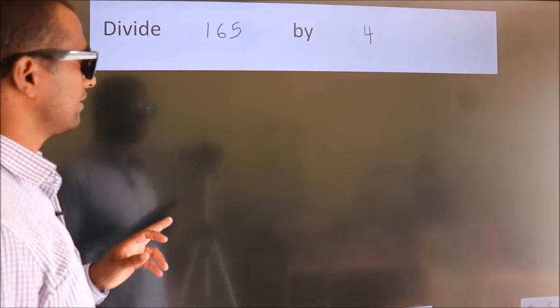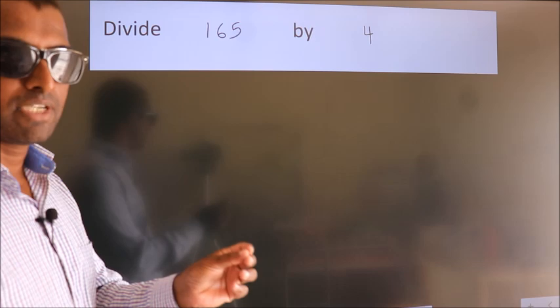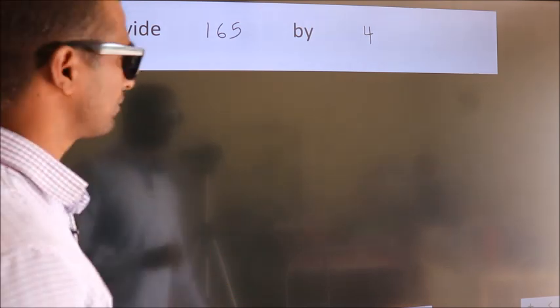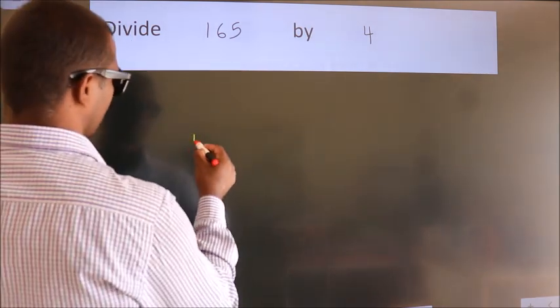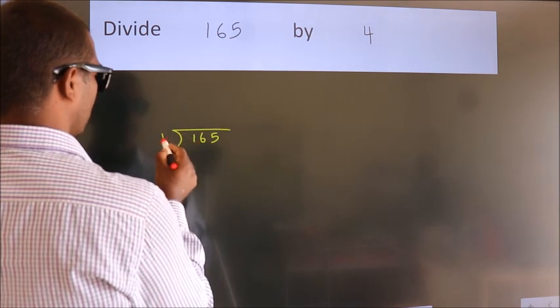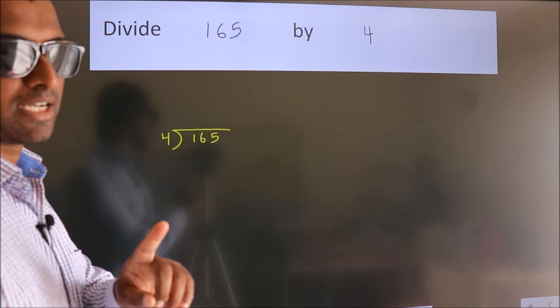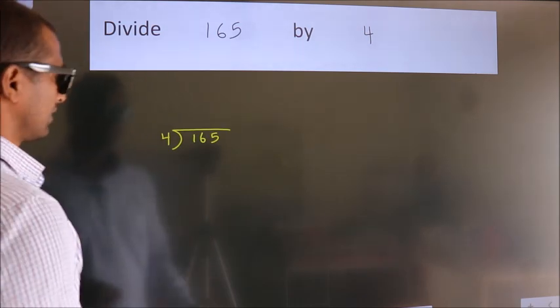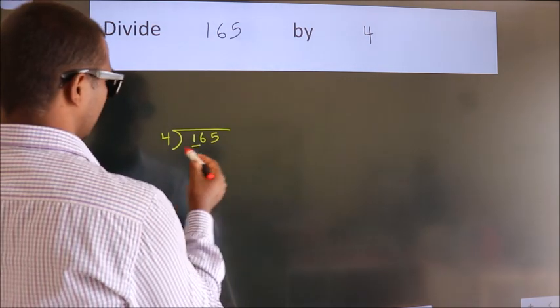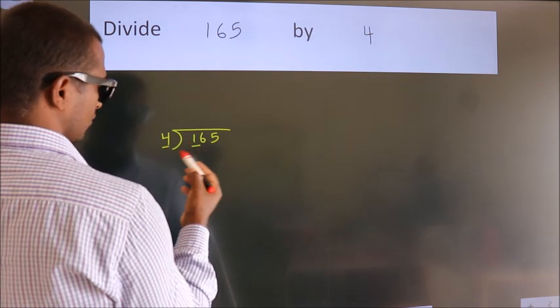Divide 165 by 4. To do this division, we should frame it in this way: 165 here, 4 here. This is your step 1. Next, here we have 1, here 4. 1 is smaller than 4, so we should take two